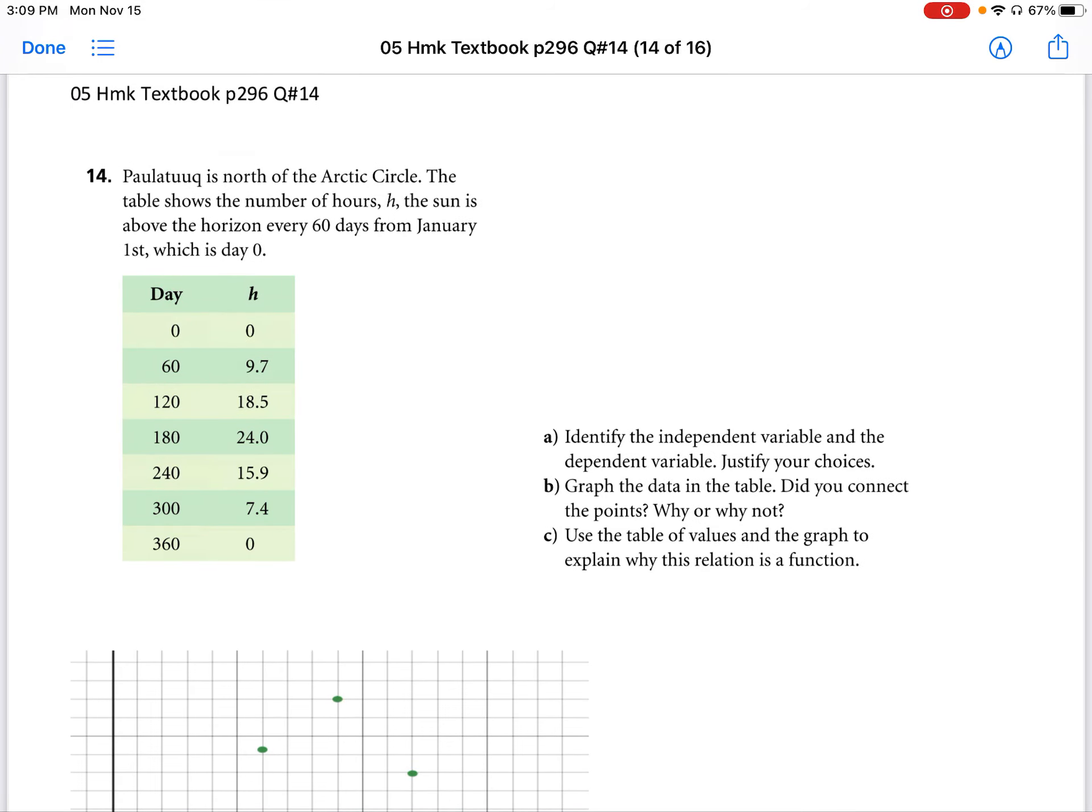Palak Tuk is north of the Arctic Circle. The table shows the number of hours h the sun is above the horizon every 60 days from January 1st, which is day 0.